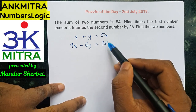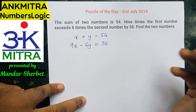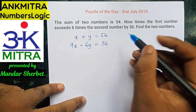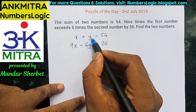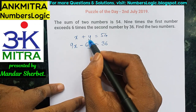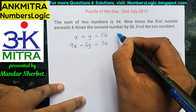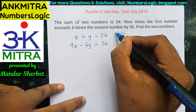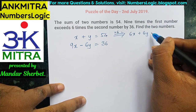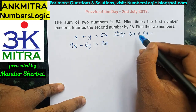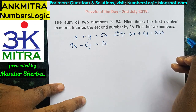Using these two equations, this can be solved using the linear equations elimination method. We'll try to match coefficients — multiplying the first equation by six gives us 6x plus 6y is equal to 324.